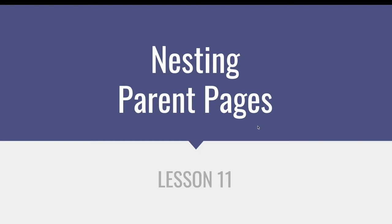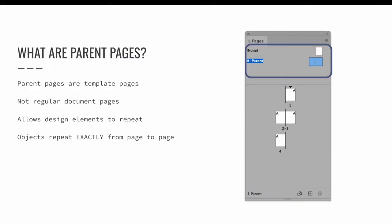Lesson 11: nesting parent pages. Parent pages are template pages — pages in addition to regular document pages that allow design elements to be repeated multiple times throughout a layout. They are similar to styles in the sense that they allow design elements to repeat, but parent pages are more restrictive. They only repeat design elements exactly from one page to another. Whatever repeats must be identical.